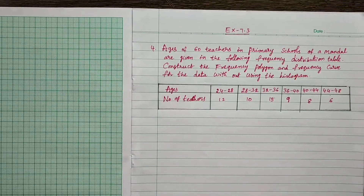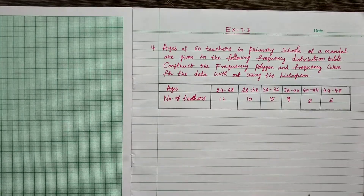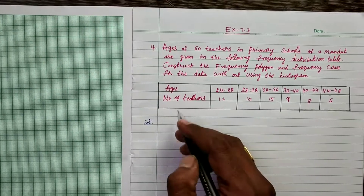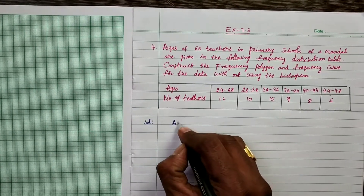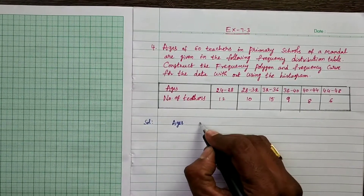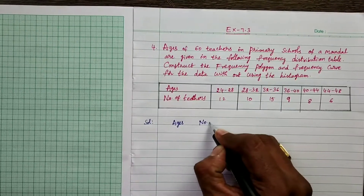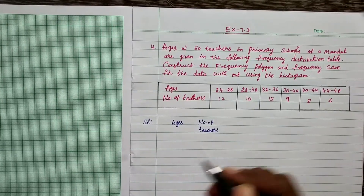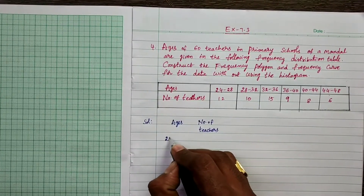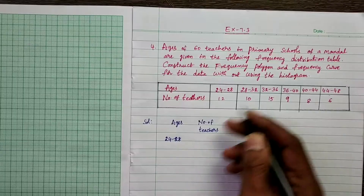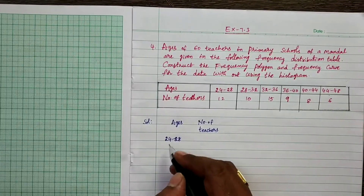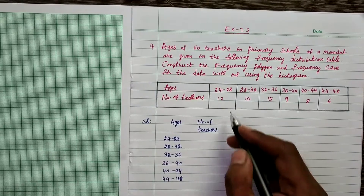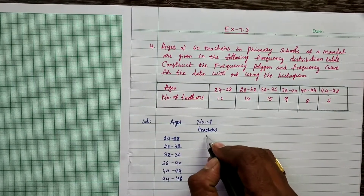Solution: First of all, arrange this frequency distribution table in columns — ages and number of teachers. The number of teachers is the frequency. For example, the frequency for 24 to 28 is 12.